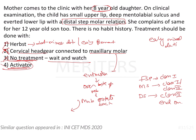The only option left is an activator. Even if there were mandibular retrognathism, a headgear would not be helpful — it would only restrain the maxilla, but the patient would not have the innate potential for the mandible to protract. We are expecting the mandible to grow and catch up with the maxilla, but a cervical headgear would not facilitate that. So the best option here is an activator, which will help to advance the mandible and correct the Class II.